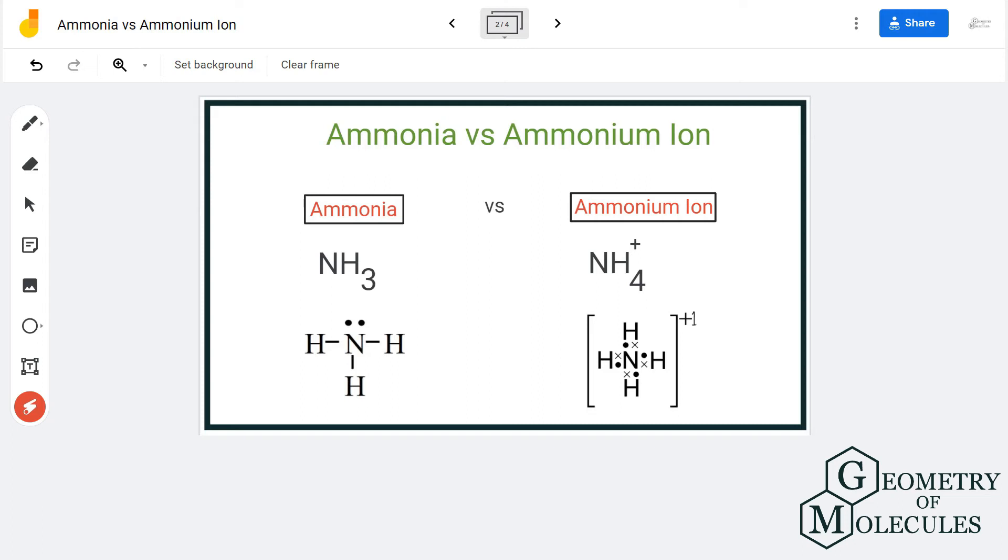So there is a difference in Lewis structures for both ammonia and ammonium ion. When we look at the molecular geometry for NH3, we can see that the lone pair of nitrogen pushes the hydrogen atoms downwards, and hence it takes a trigonal pyramidal shape.